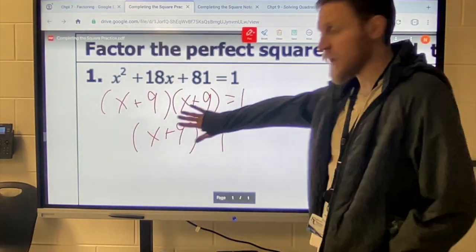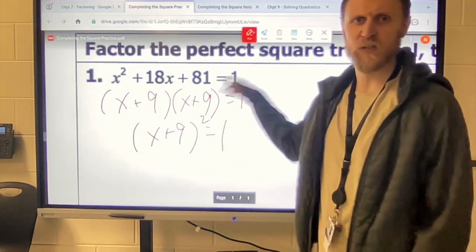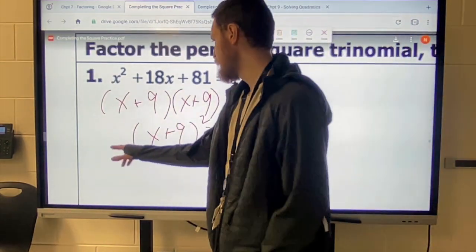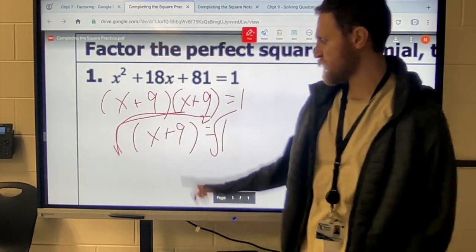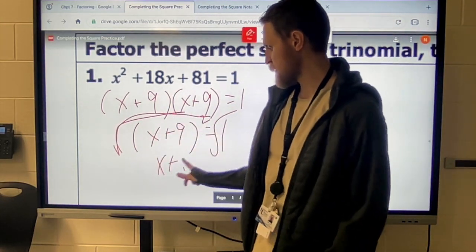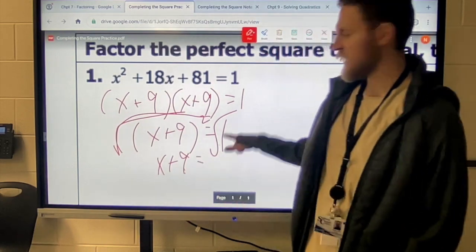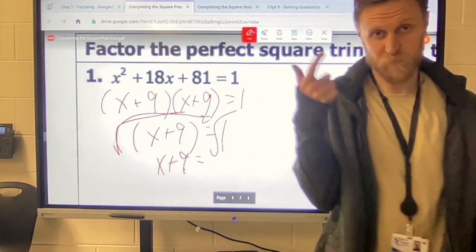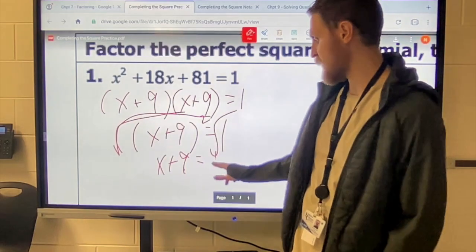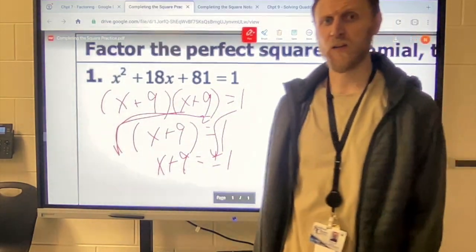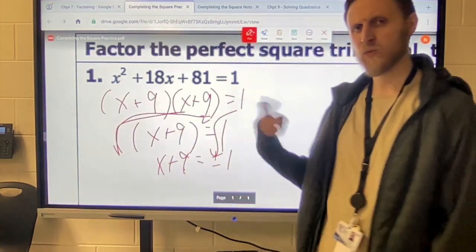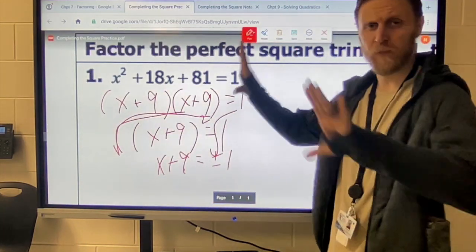And this equals 1, which in this case is also a perfect square, which is nice. So at that point, once we have it set up like that, you can just take the square root of both sides to solve. So the square root of this, square root of this, that side is just going to get rid of my square root, which leaves me with an x plus 9 equals, and then the square root of 1 is just plus or minus 1. And that plus or minus is important.